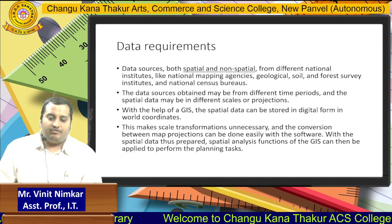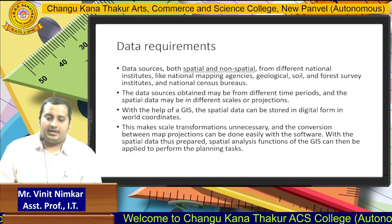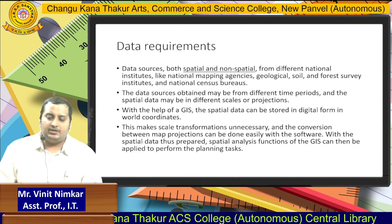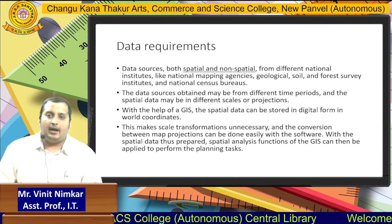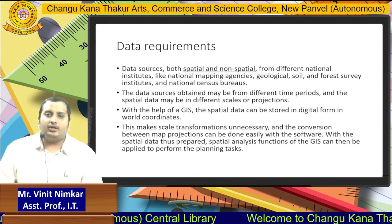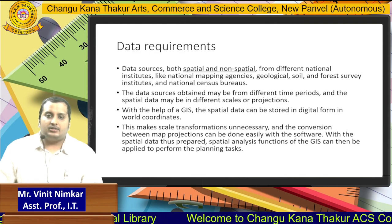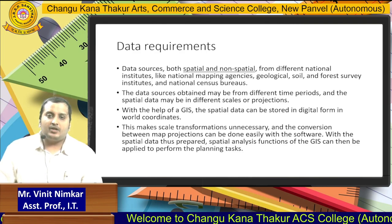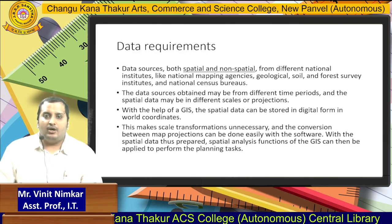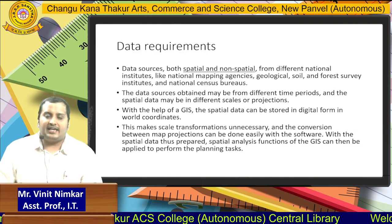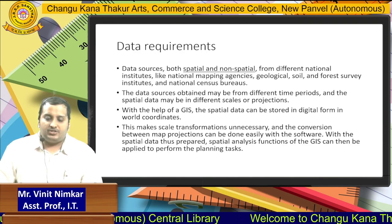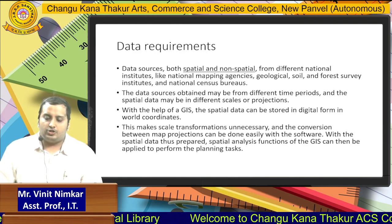Now if we talk about data requirements in GIS, data sources can be both spatial and non-spatial. Spatial here refers to any geographic phenomenon or data which has a specific reference value such as its location. If any geographic phenomenon whose location is exactly known to us, such data is called spatial data. If a geographic phenomenon does not have location information, then such data is called non-spatial data. With the help of GIS, we require both spatial as well as non-spatial data.